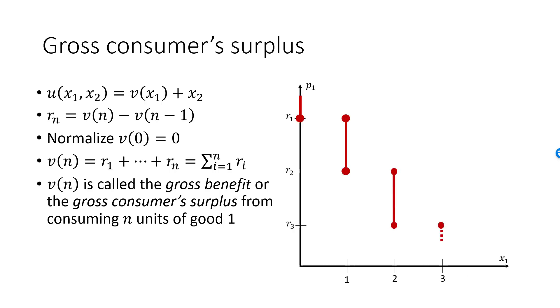In terms of the demand curve for good 1, the gross benefit of consuming 1 unit of good 1 is this green rectangle. The area of this rectangle is r1 times 1, which is precisely v of 1. v of 2 is the gross benefit of consuming 2 units of good 1, and it equals r1 plus r2. The second green rectangle has an area of r2 times 1, and the total green area is v of 2.